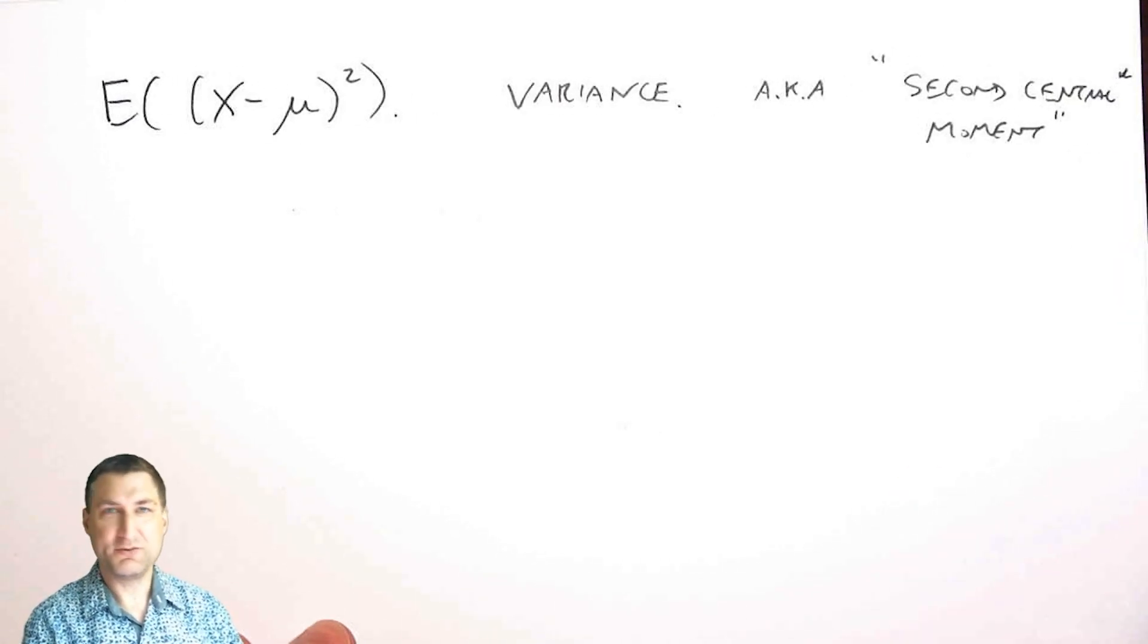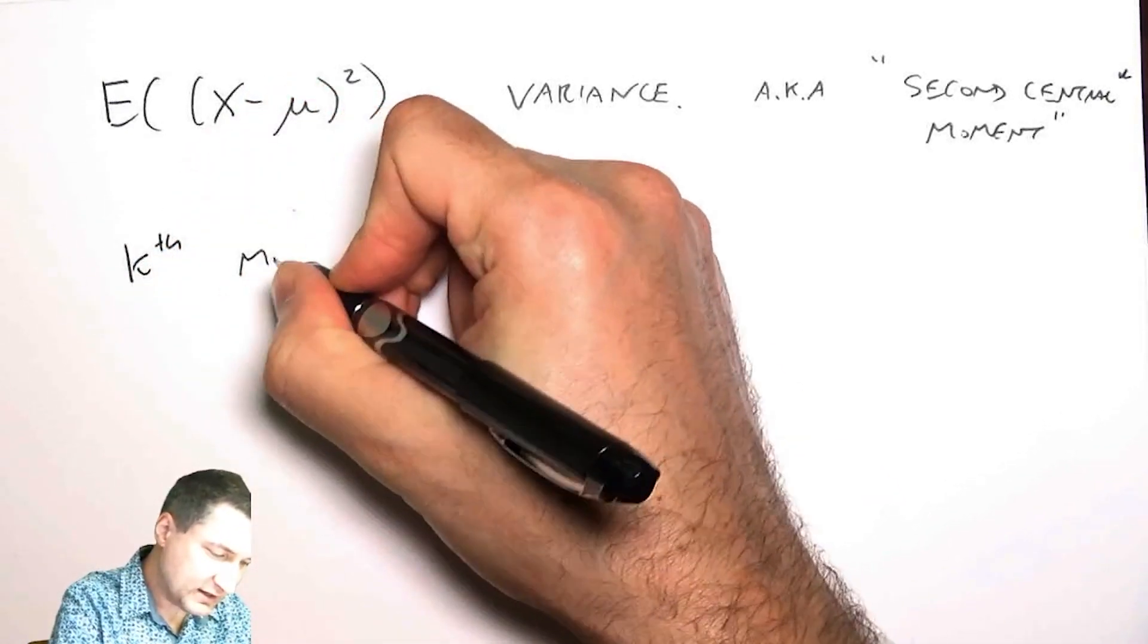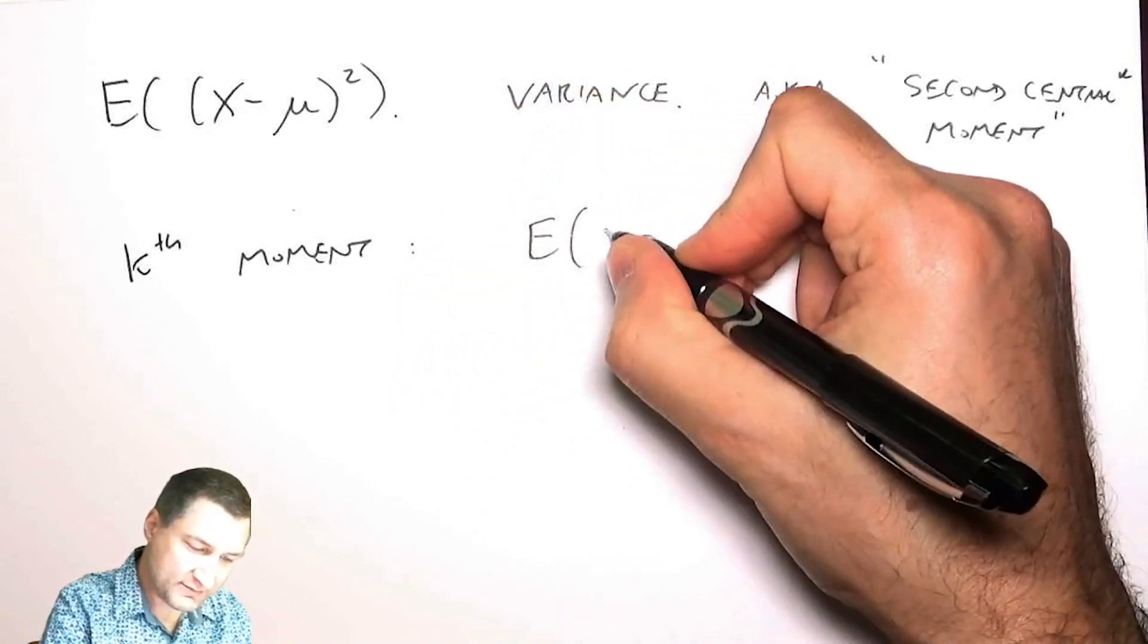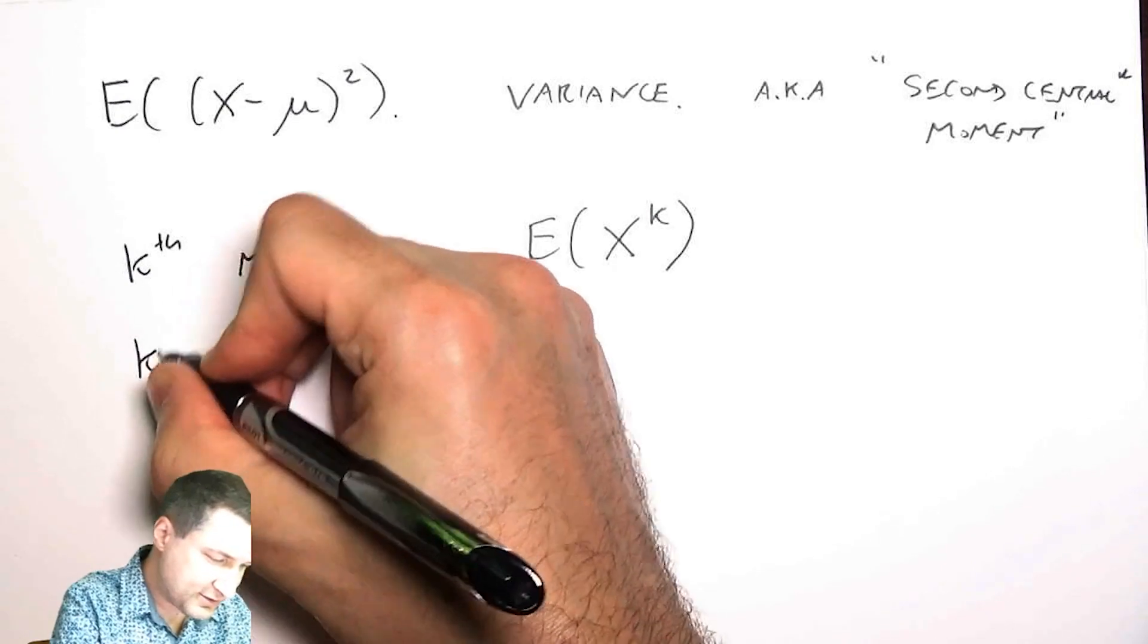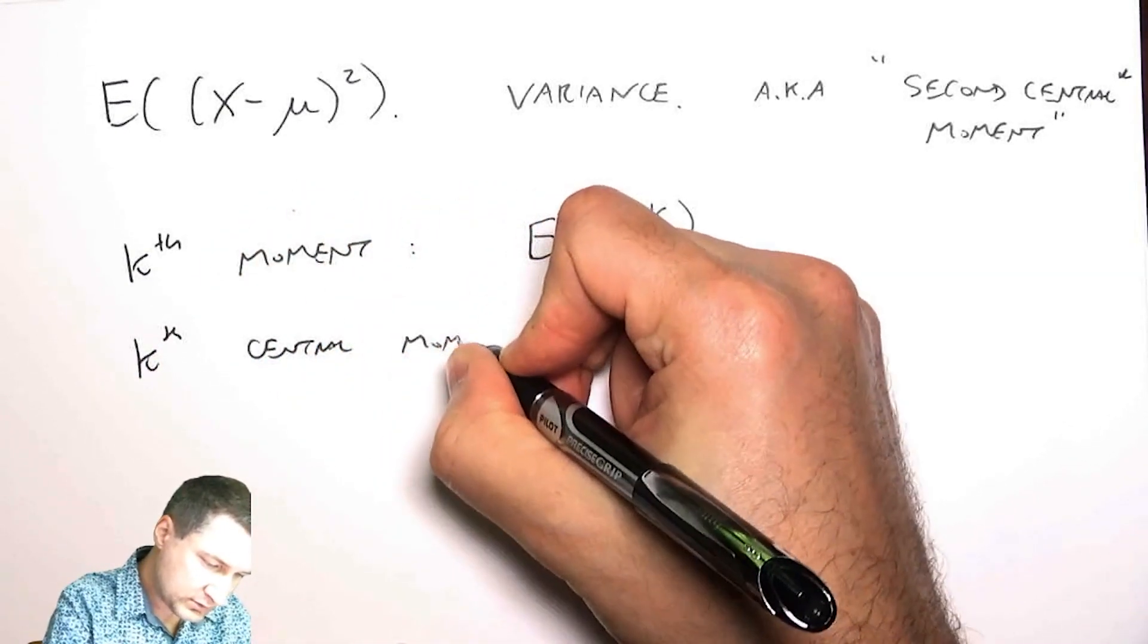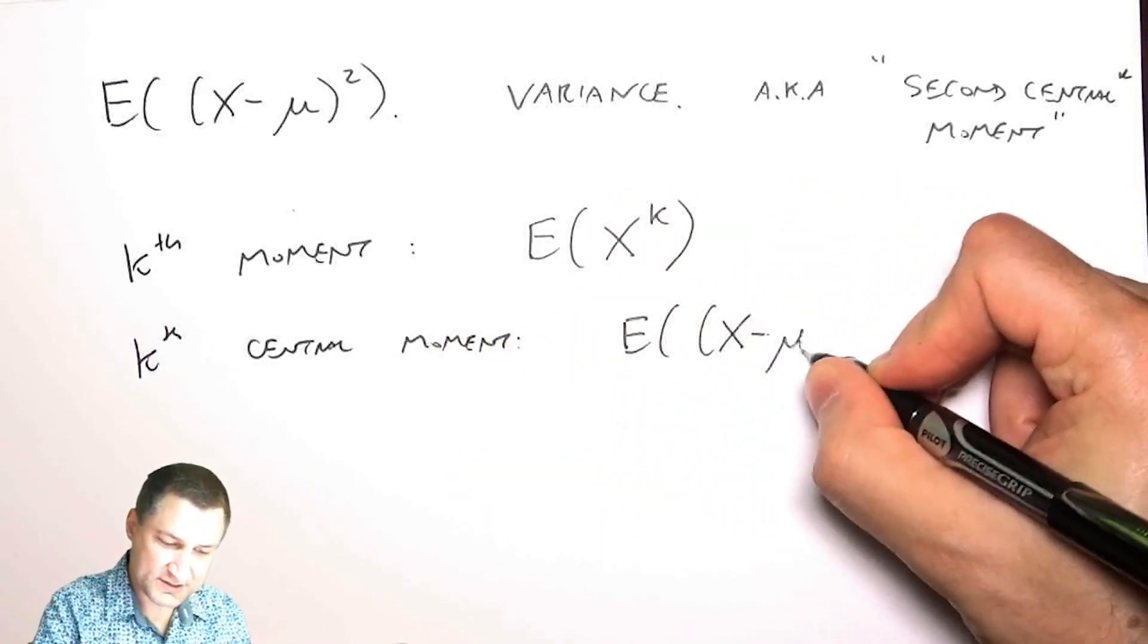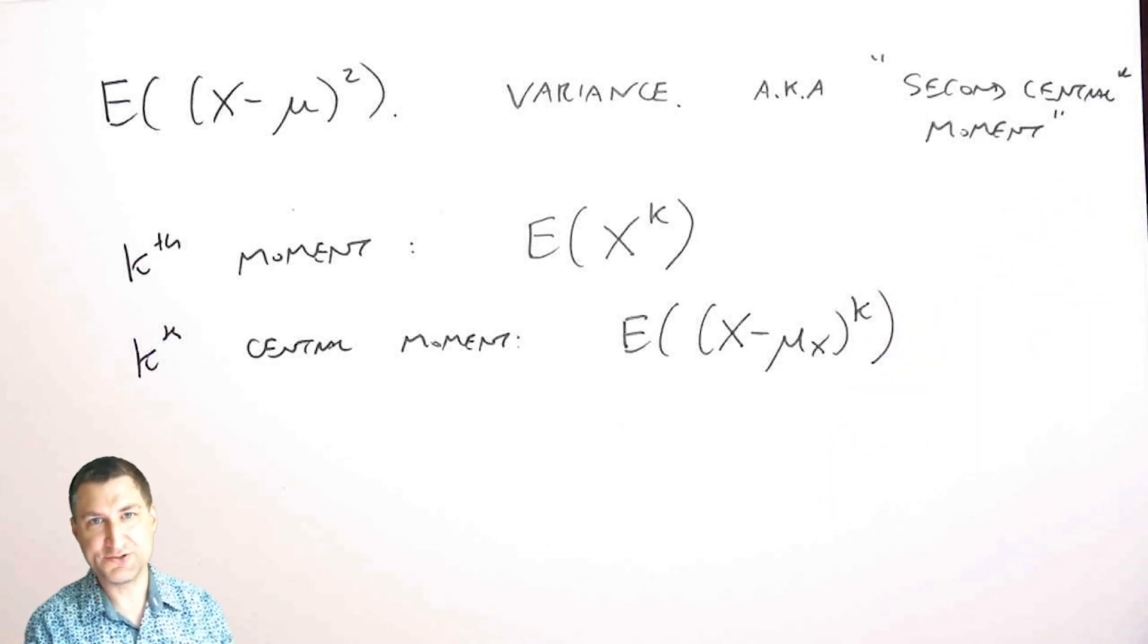What this means is that I could have the kth moment of just one random variable as the expected value of X to the k, and then I could have the kth central moment as the expected value of X minus its mean to the k. So really the variance is like this with k equals two.